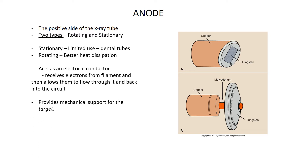The anode also provides mechanical support for the target, which is on the face of the anode where the x-rays are going to be created. The anode also has to be a good thermal conductor, because when you create x-rays, 99.8% of the kinetic energy of the electrons turns into heat.